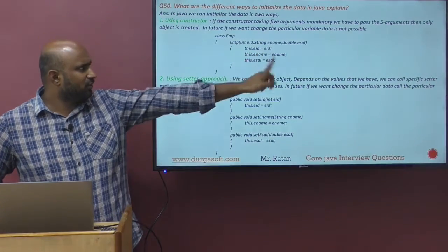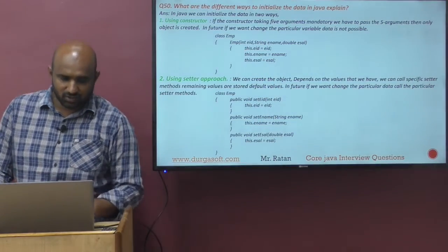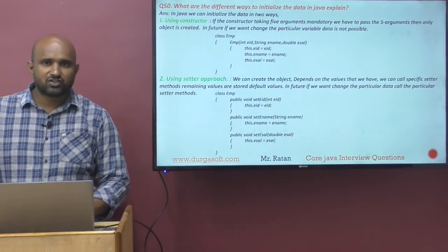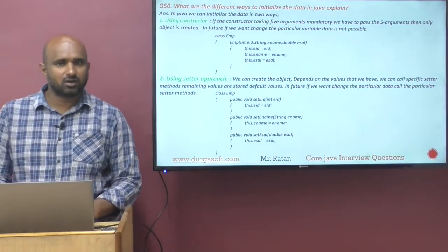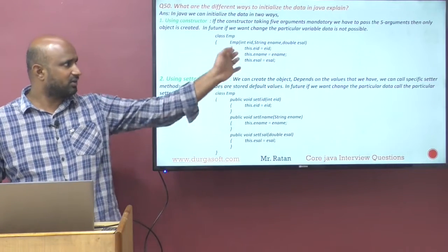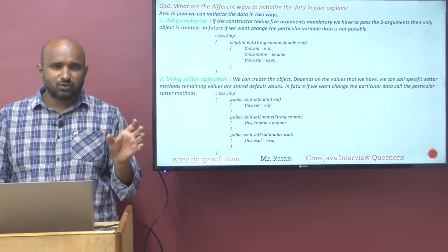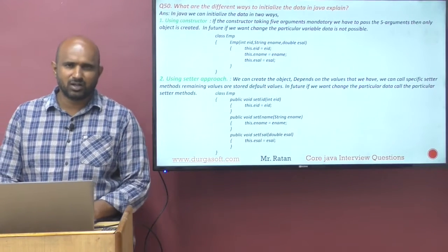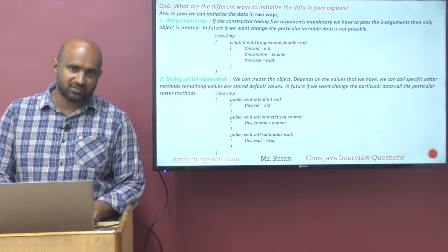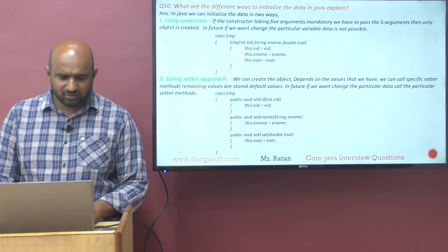Take an Employee class. During object creation, we will pass the data to the constructor arguments. Constructor arguments are local variables, and we convert those local arguments to instance variables. During object creation to initialize the data, we use the constructor.